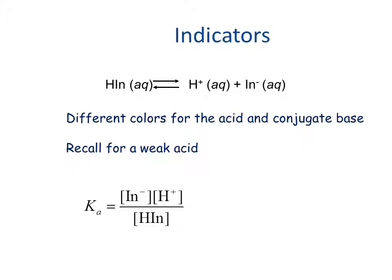In titrations we use it to determine where the endpoint of a titration is, where the equivalence point is. And let's think about this. So it's a weak acid and we have different colors for the acid and conjugate base. So let's look at it in terms of pH.